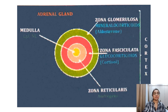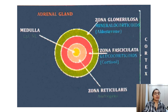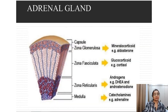This is the cross-section of the adrenal gland. The center part is the medulla, which releases epinephrine and norepinephrine. The cortex has three parts: the outer part is the zona glomerulosa, which secretes mineralocorticoids; the middle part is the zona fasciculata, which releases glucocorticoids; and the inner part is the zona reticularis, which releases androgens.